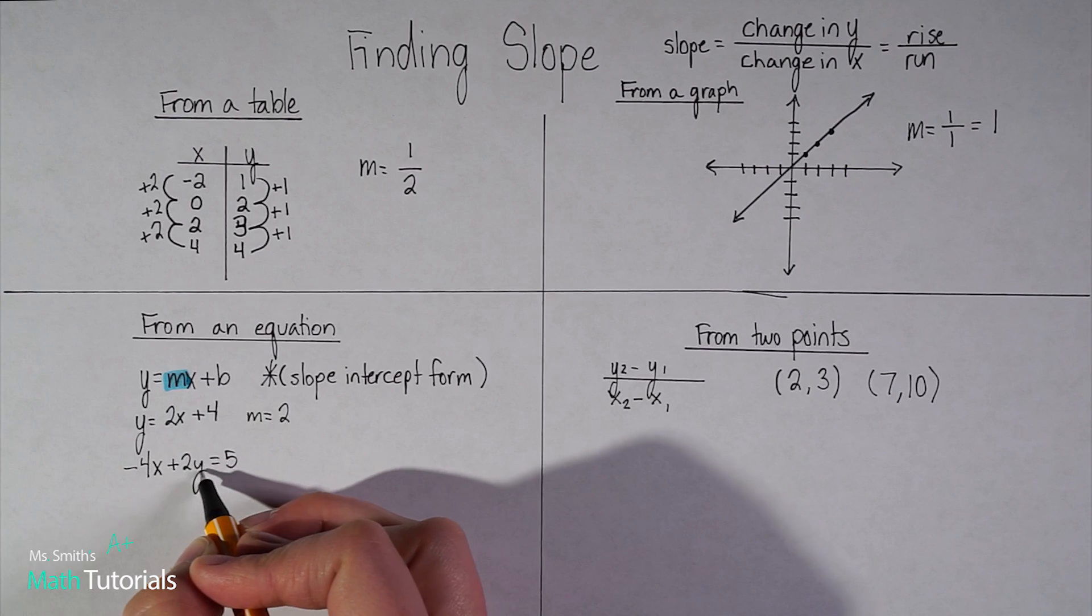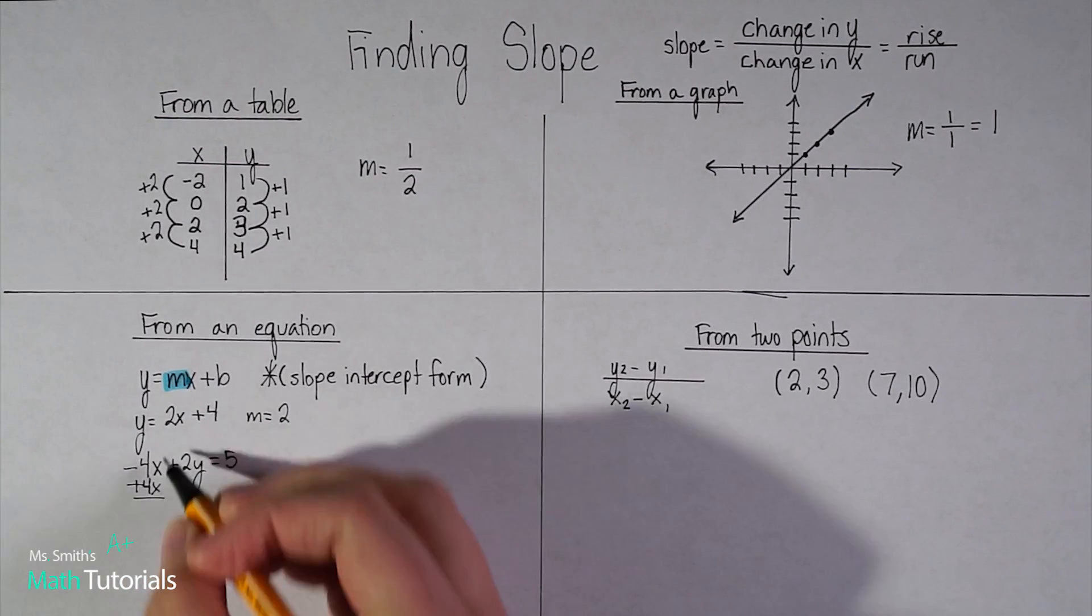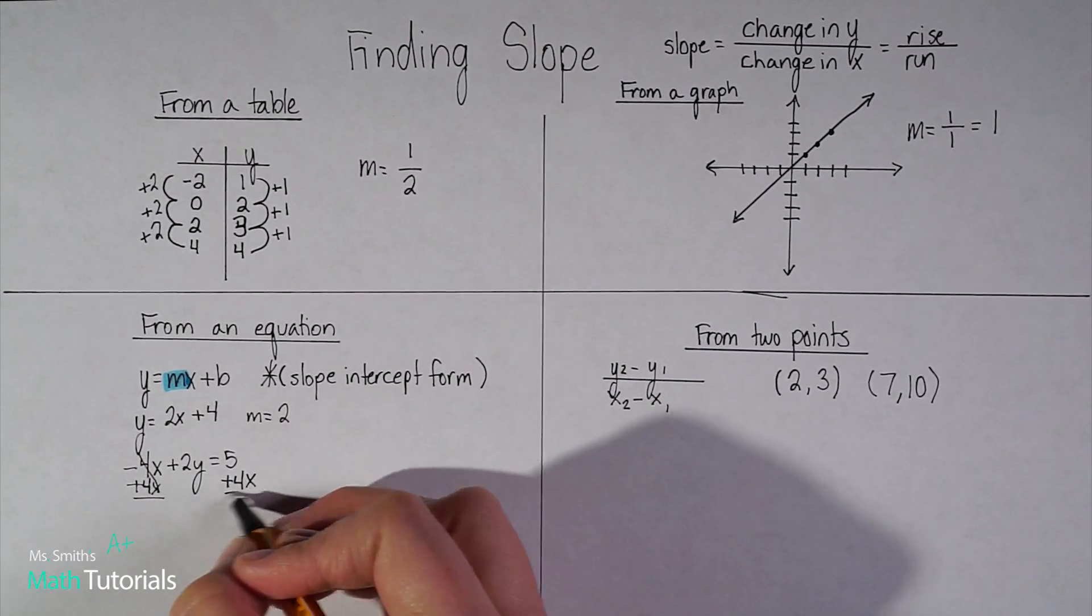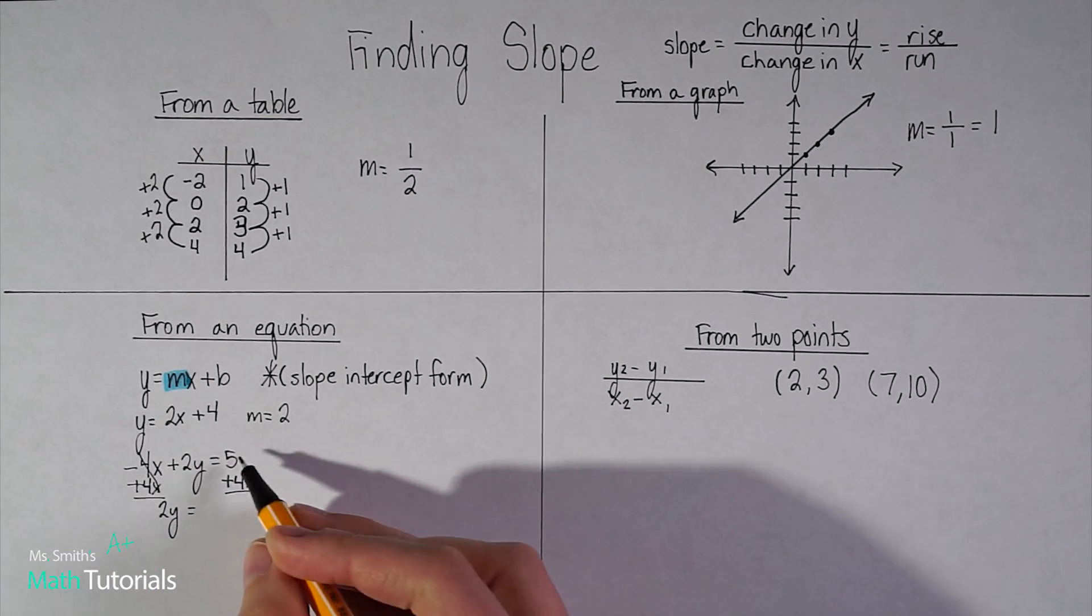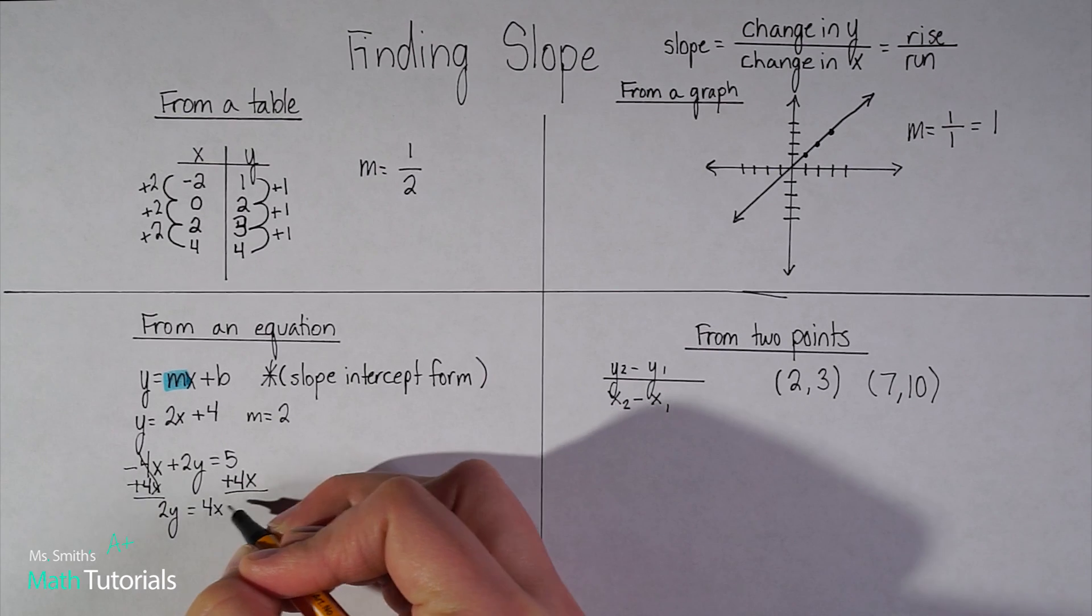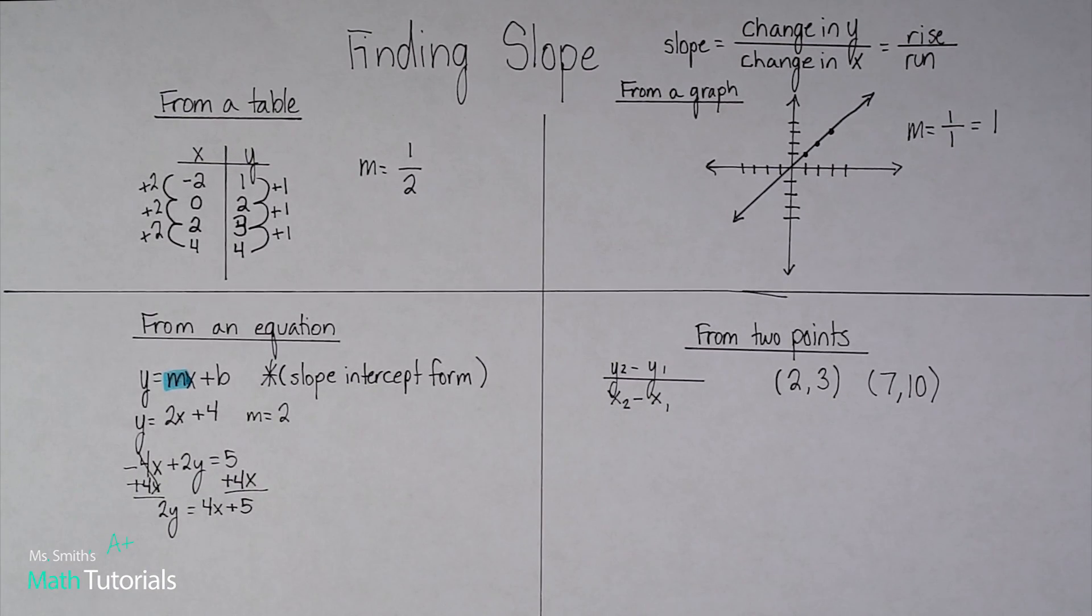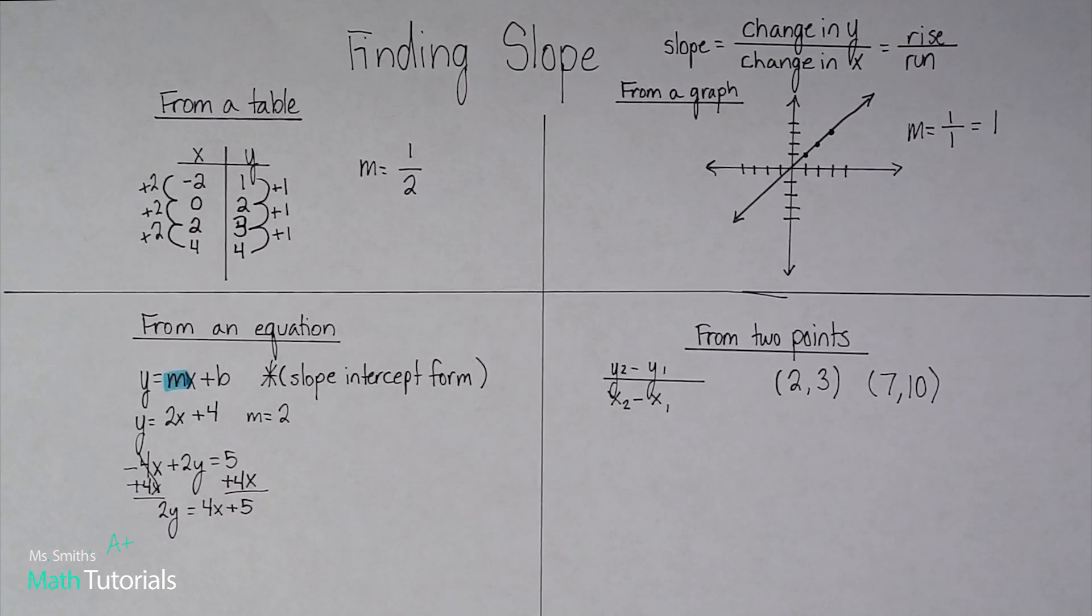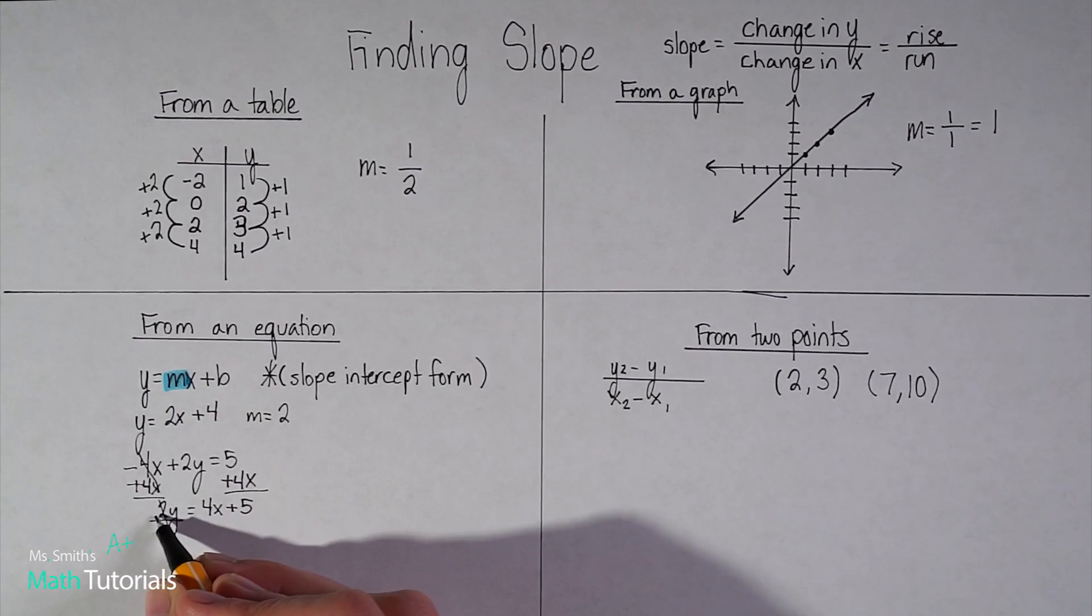So I know I need my y alone. So I'm going to go ahead. This is what I'm trying to get alone. So I'm going to go ahead and add my 4x, right? Because I want to move it over here. So I would have 2y equals, now I can't combine 5 and 4x, but I can just rewrite them. And remember, we want to rewrite it in standard form. So I want to put my variable first, constant last.